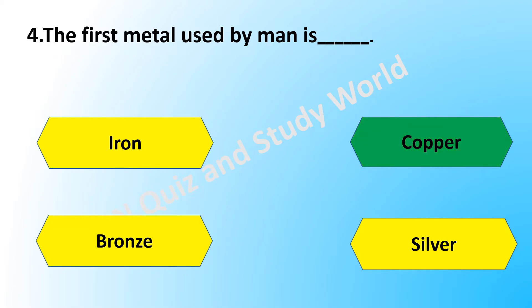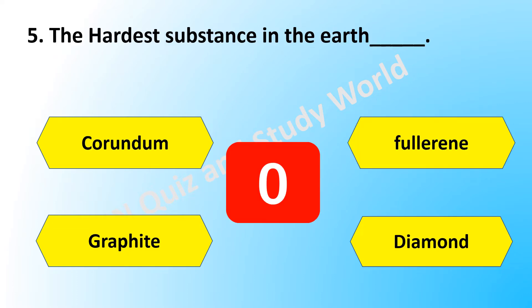The answer is copper. Which is the hardest substance on earth? Is it corundum, fullerene, graphite, or diamond?